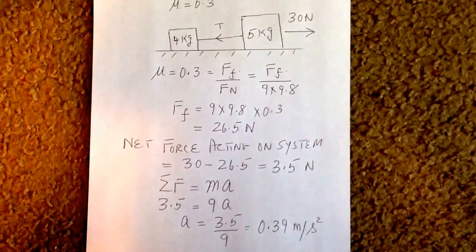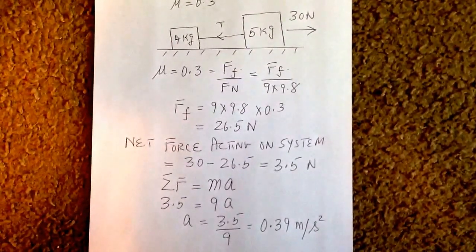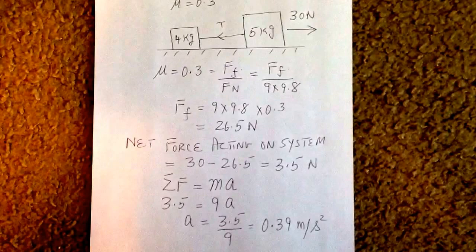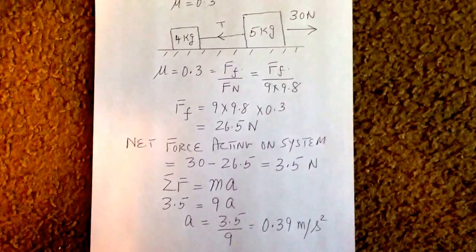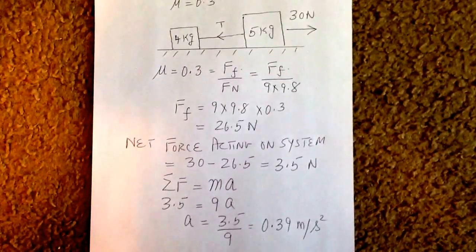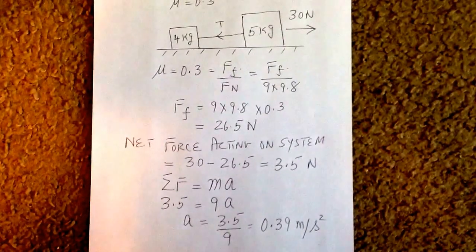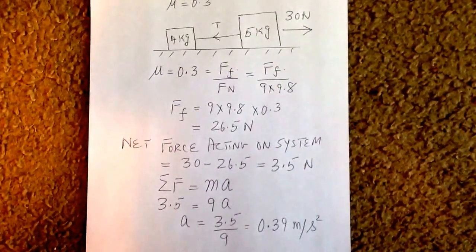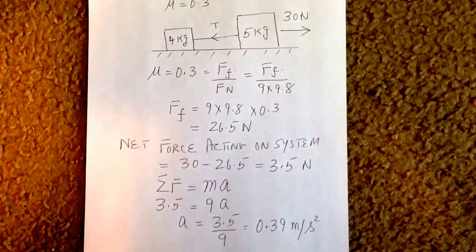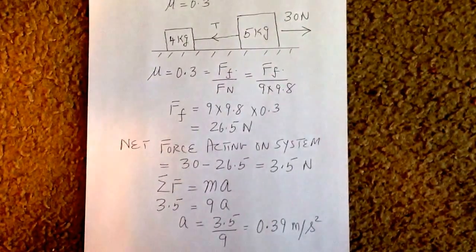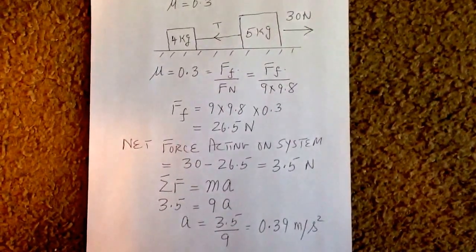Therefore, if we apply the equation the net force equals mass times acceleration, mass being 9 kilograms, we have the equation 3.5 equals 9 times A and we get the acceleration to be 0.39 meters per second squared.